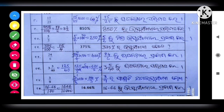Next, number nine: 850 percent. So we will get 850 percent, divided by 100, which gives 150 by 100. So we will get 10 by 2, and the result is 120 percent — meaning 17 by 2.